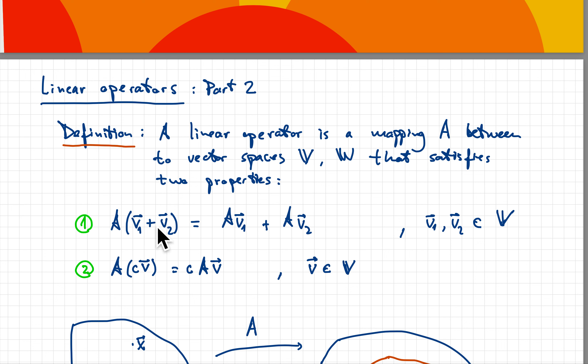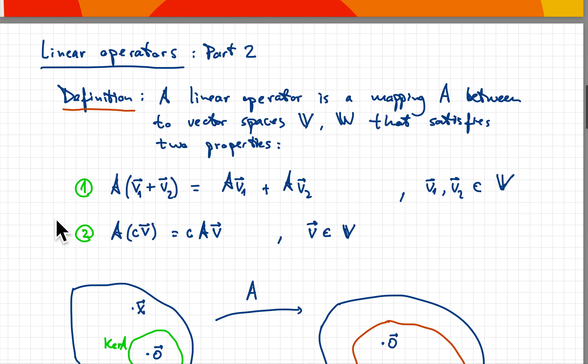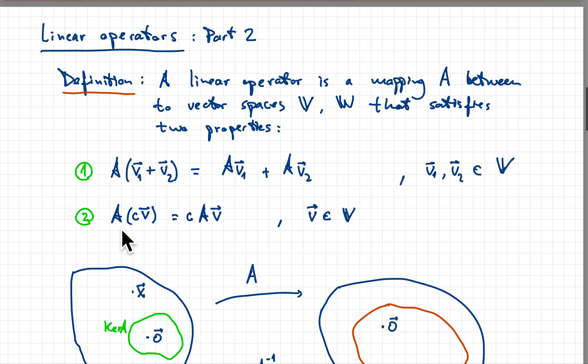So you can do the sum before or after applying the operator and get the same result. The second part of linearity is that if you apply the operator to a constant times a vector in V, it's the same as applying the operator to the vector first and then multiplying by the constant.